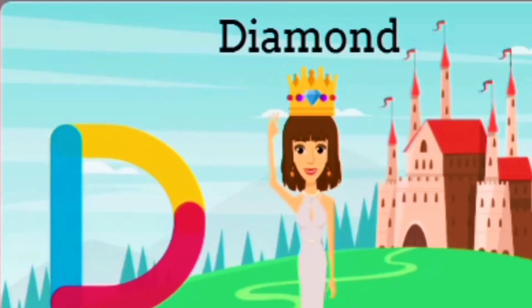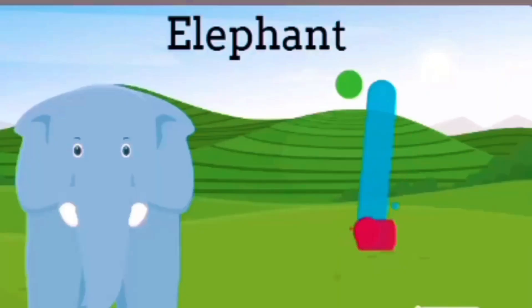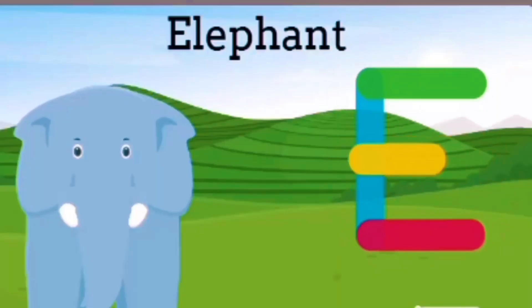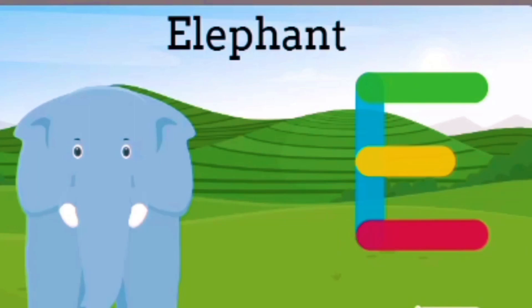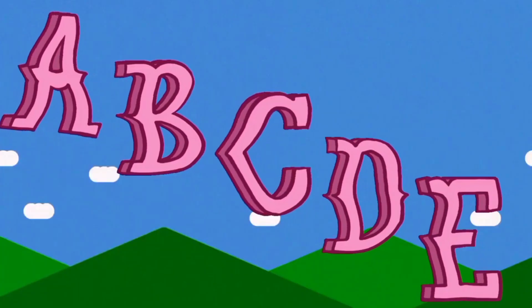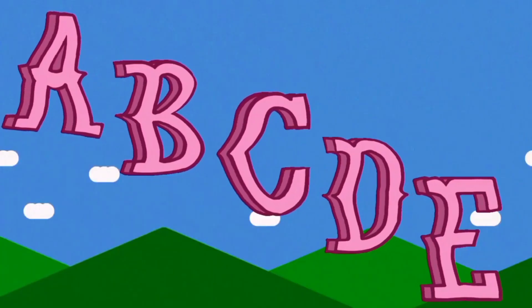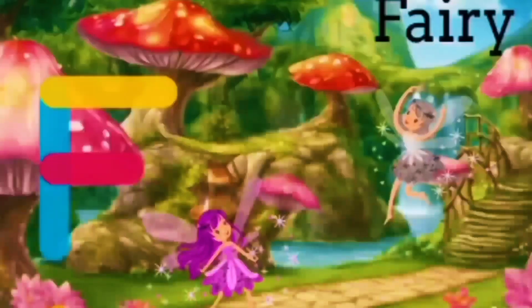D for diamond, dada, diamond. E for elephant, elephant. A, B, C, D, E.